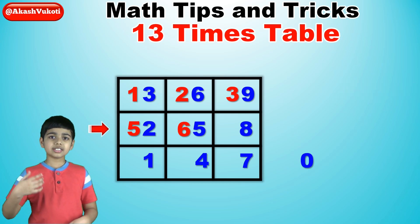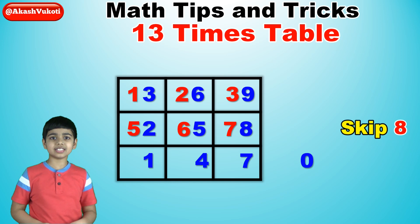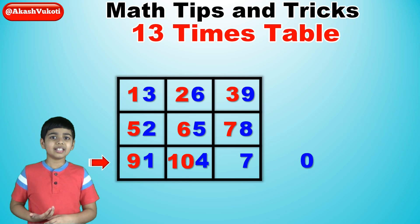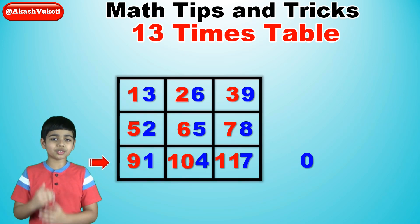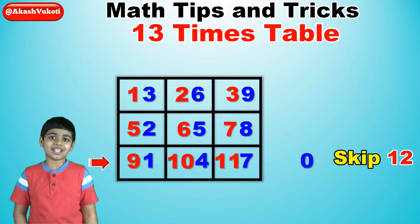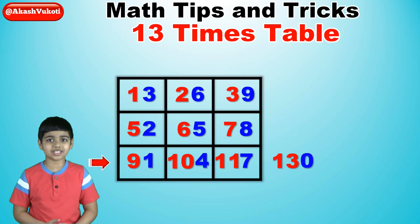Continuing: 6, 7, skip the 8, then 9, 10, 11, skip the 12, and then we put a 13 next to the 0 outside of the box.